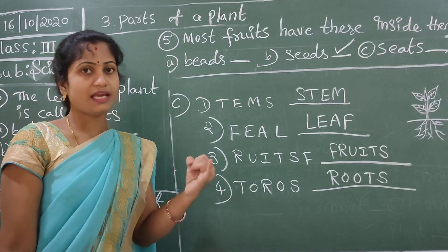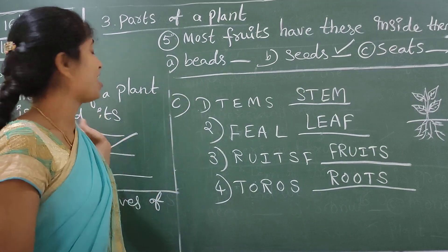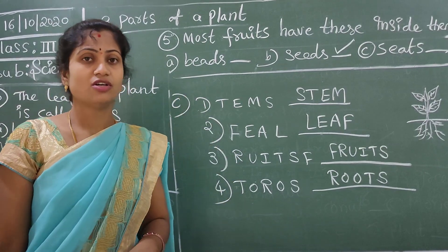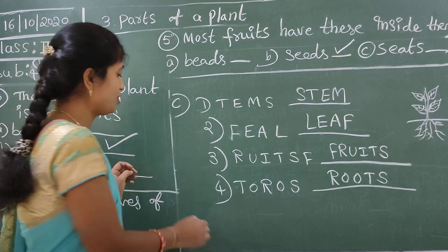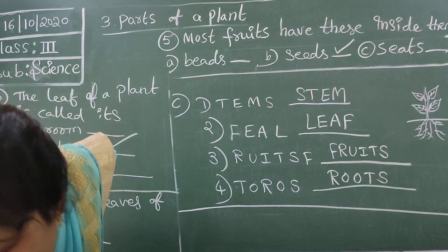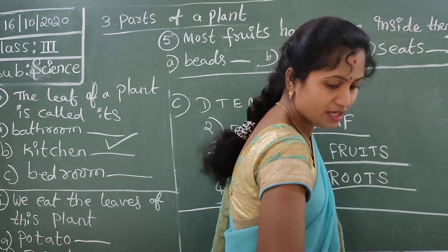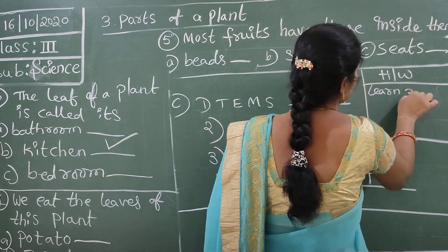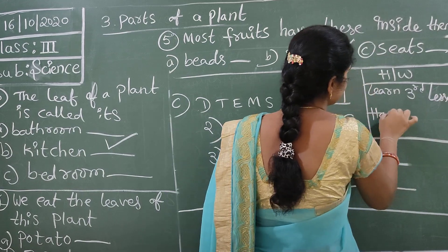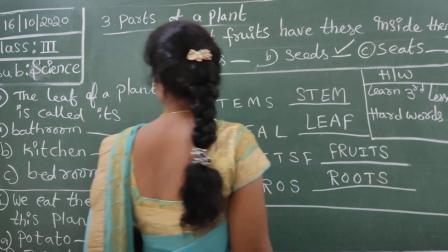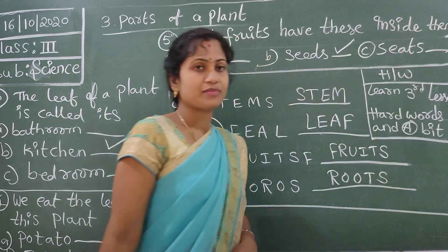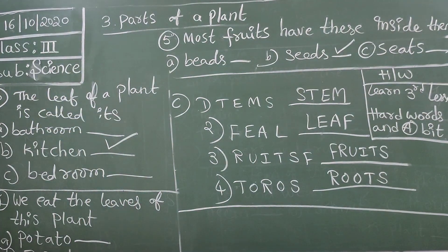Understand? A, B, C - three sections completed, plus the hard words - four sections completed. Enough for today. You have to learn the hard words for homework. Tomorrow you will write the questions. Take the home book, it's a long tall lesson. Learn the hard words and take the correct answers. A-bit also learn. Thank you children.